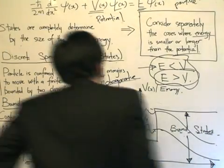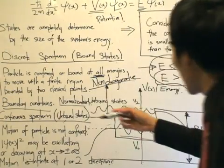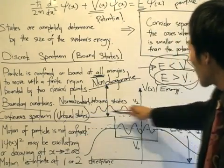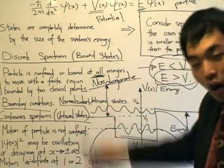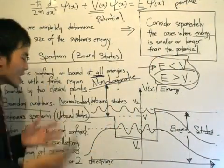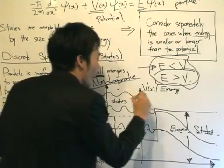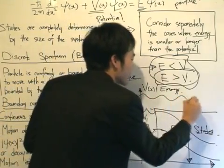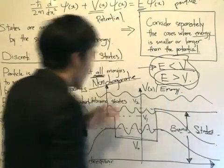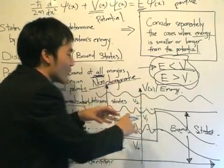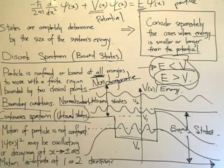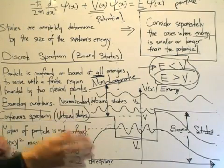The assumption that the energy is between V1 and V2 gives us an unbound state. We will also have an unbound state if the energy is larger than V2, in which case the motion is oscillating throughout both directions — from minus infinity to plus infinity — because the energy value is higher than the potential in all cases. That's why we get a continuous spectrum.